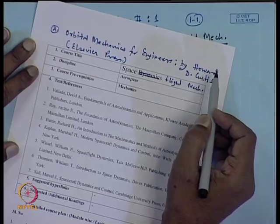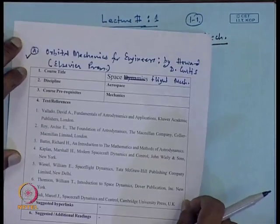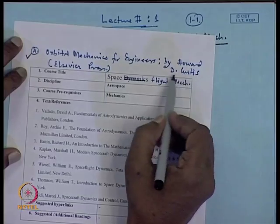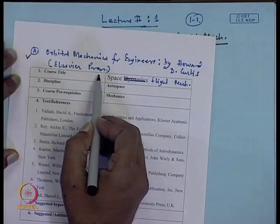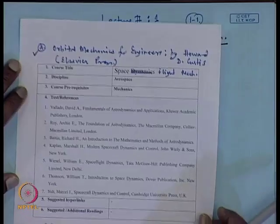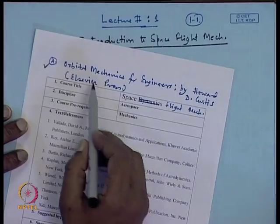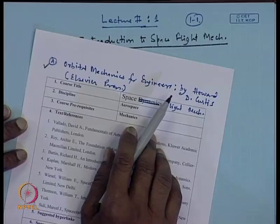The books for this course: a recent book which has been published is 'Orbital Mechanics for Engineers' by Howard D. Curtis, from Elsevier Press. Other books are also available. Those books are of very high quality, but the book published recently — orbital mechanics for engineers — especially contains a lot of solved problems, so you can benefit by using this.